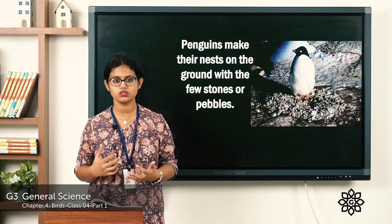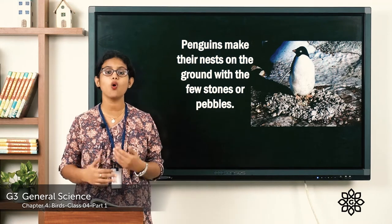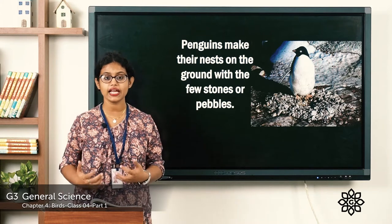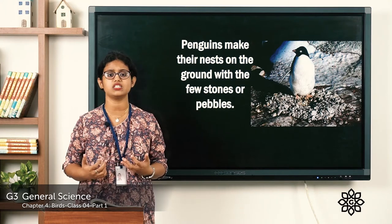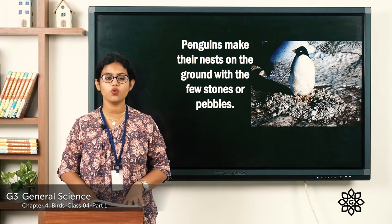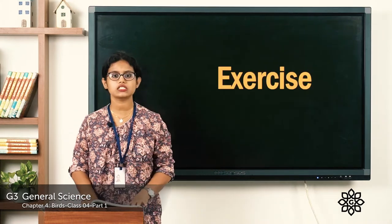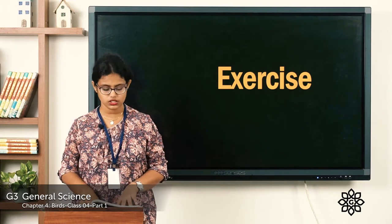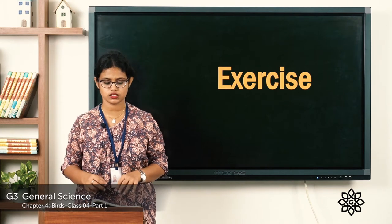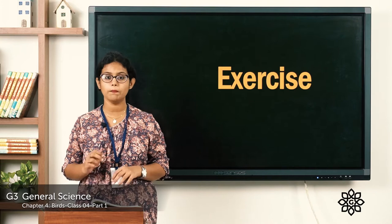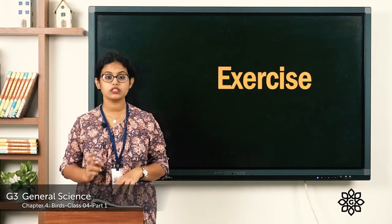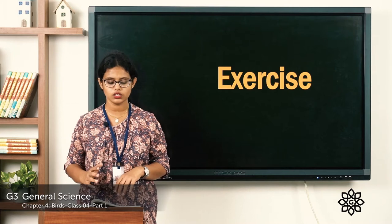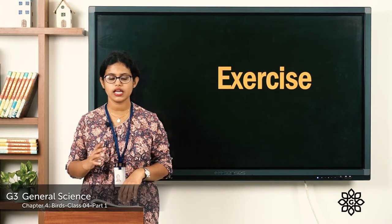To summarize: the home of birds is called a nest. Birds lay eggs in their nest and raise their young ones there, using different materials to build it. Now let's go to page number 44 in your textbook and start with the first exercise. Read the options and mark your answers: the tail of a bird helps it to — fly, walk, run, or swing. The body of a bird is covered with — scales, feathers, hair, or fur.